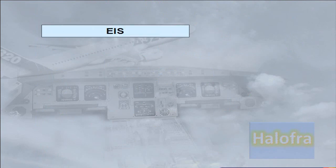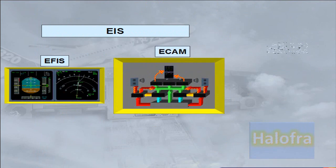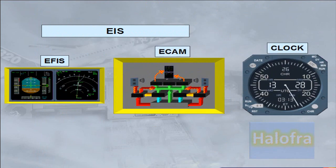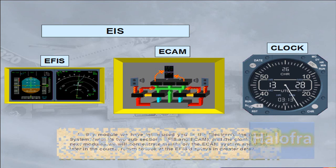In this module, we have introduced you to the electronic instrument system with its two subsections, EFIS and ECAM, and the clock. In the next modules, we will concentrate mainly on the ECAM system, and then, later in the course, return to look at the EFIS displays in greater detail.